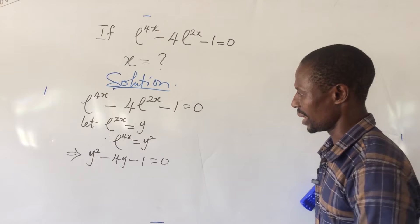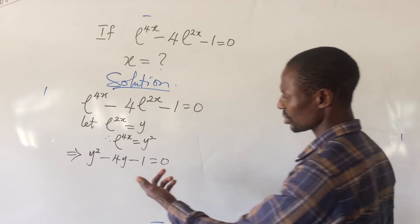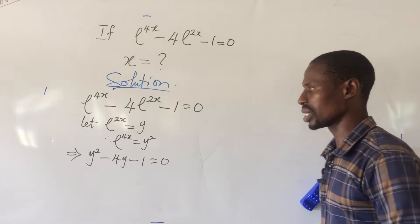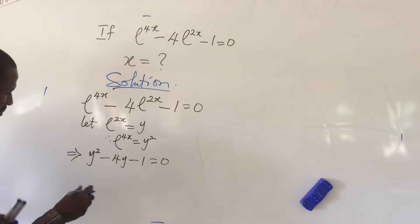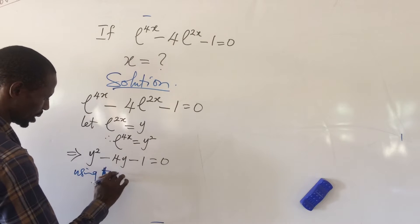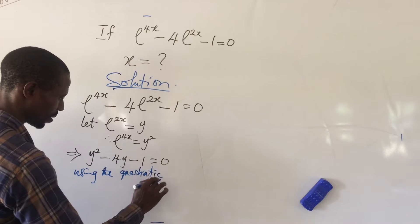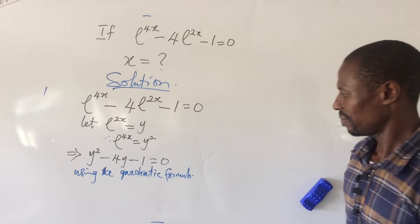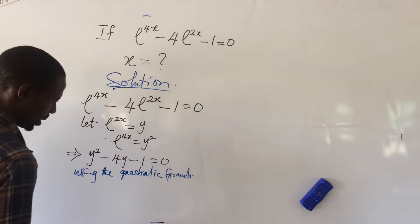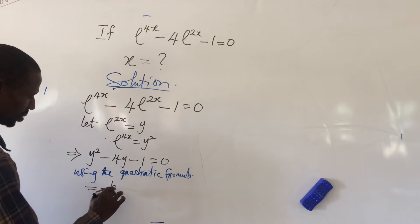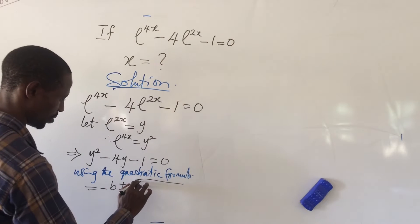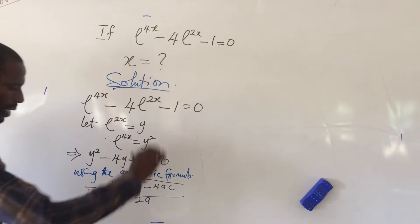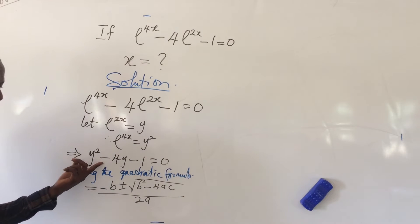Now this is a quadratic equation, and if you look at this quadratic equation, we cannot solve it using the factorization method. So what we do is use the quadratic formula. Using the quadratic formula, which says that x equals minus b plus or minus the square root of b squared minus 4ac, all over 2a.